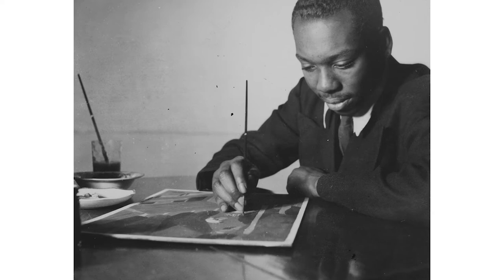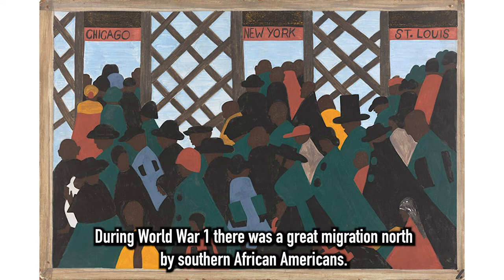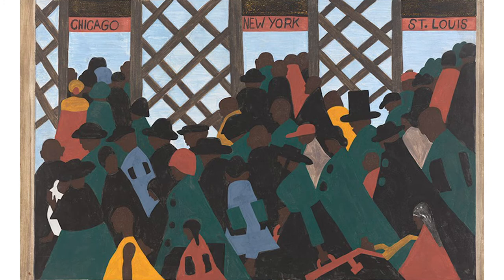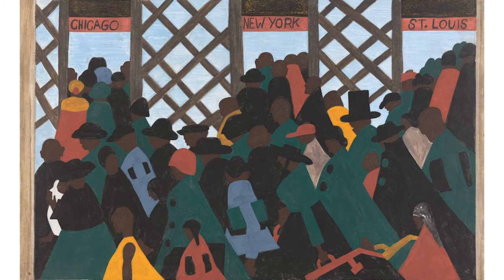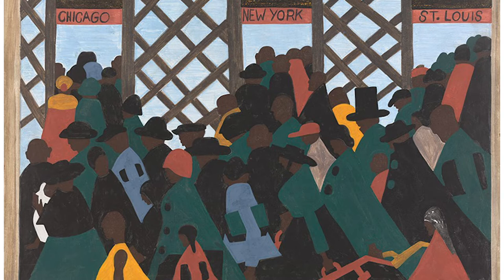He called his story the Great Migration, and this was panel one. Underneath the picture it read: during World War I, there was a Great Migration North by Southern African Americans. You can see that crowds of African Americans are at the train tracks waiting for the trains. What colors did Jacob Lawrence use? Can you see any facial expressions? The way he painted the crowd almost makes me feel anxious, probably like these people felt.